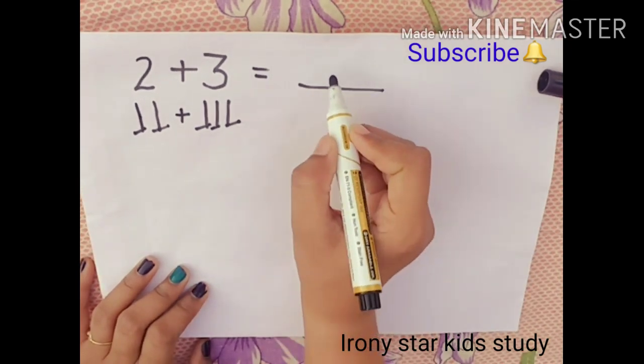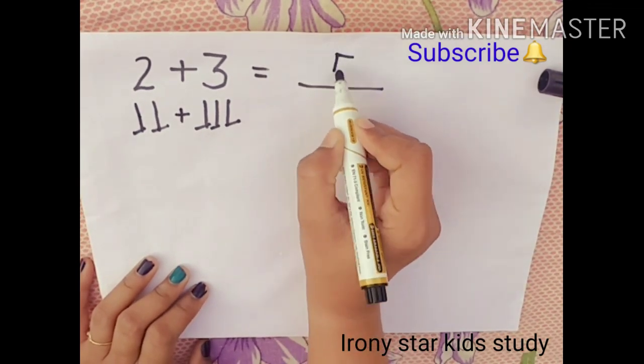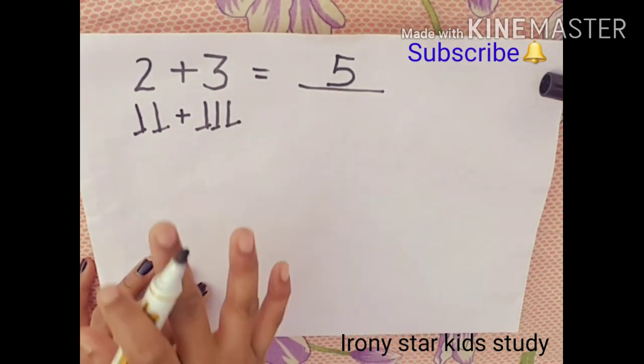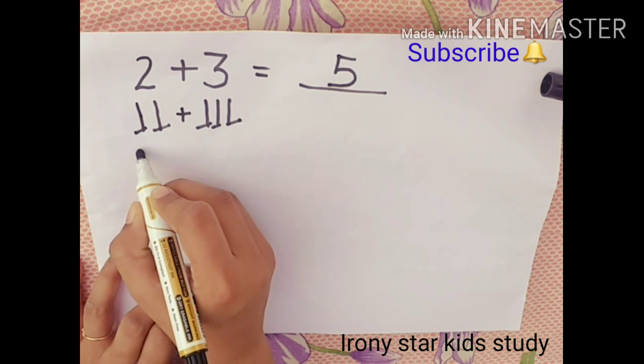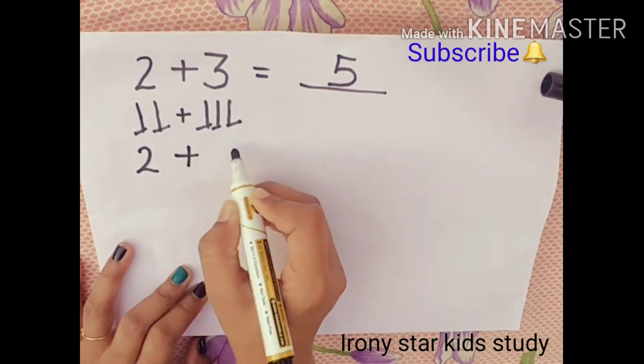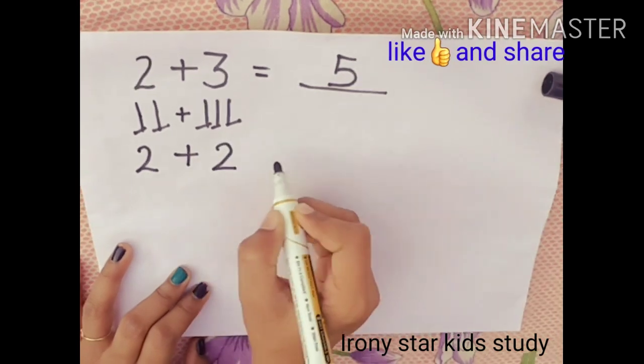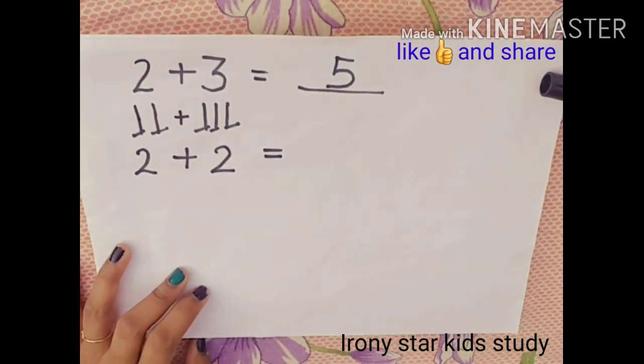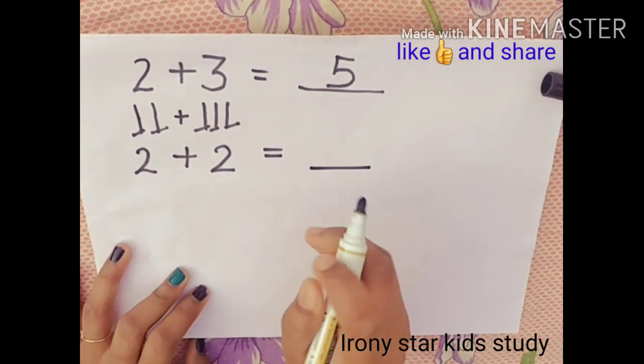So here 2 plus 3 comes 5. So another example I will take. 2 plus 2 equals to how many will come here? Can you guess?